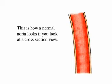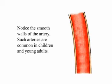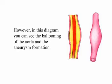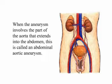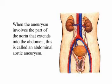This is how a normal aorta looks if you look at a cross-section view. Notice the smooth walls of the artery — such arteries are common in children and young adults. However, in this diagram, you can see the ballooning of the aorta and the aneurysm formation. When the aneurysm involves the part of the aorta that extends into the abdomen, this is called an abdominal aortic aneurysm.